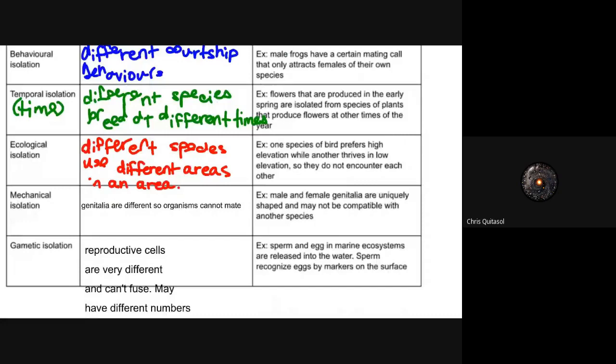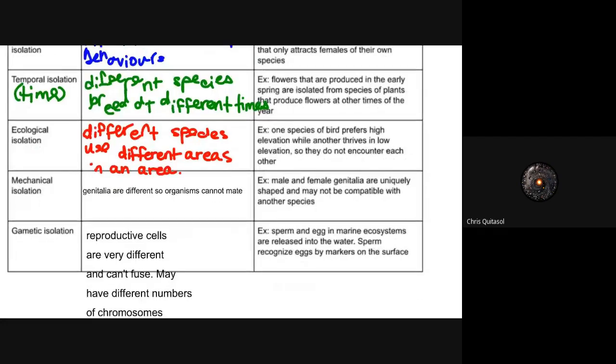Another is ecological isolation, where different species use different areas to reproduce. One species of bird prefers high elevation while another thrives at lower elevation, so they never encounter or reproduce with each other.